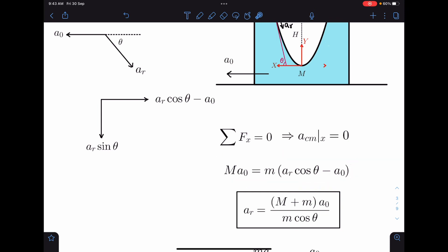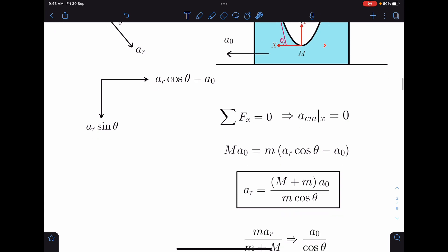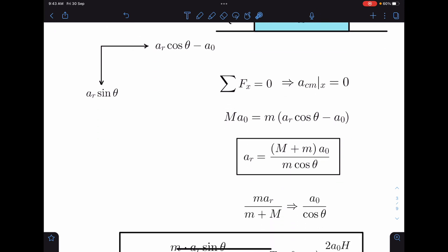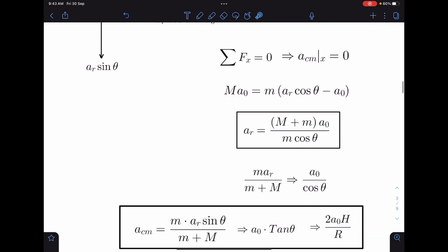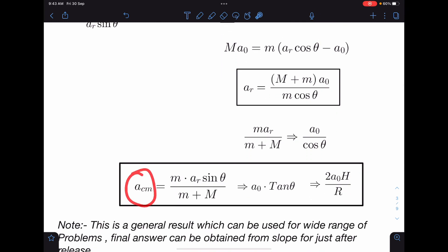I did not want to use that relation, but basically just differentiate the momentum equation and you will get this. So Ma₀ = m(aᵣcos θ - a₀). When I simplify this, I am getting aᵣ value which is (M + m)a₀/(m cos θ).